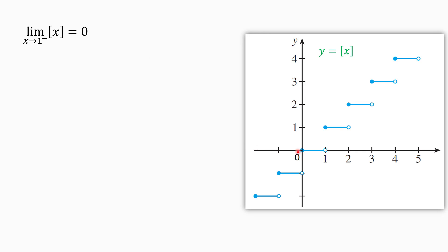By looking at the graph of the greatest integer function, we can also find the limit. If we get closer and closer to 1 from the left, you can see that the y-values of this function are constantly 0. So if we get closer and closer to 1 from the left, the y-values are always 0, and the limit is 0.